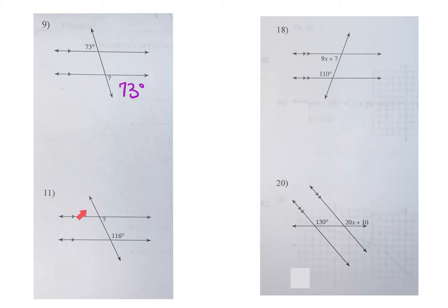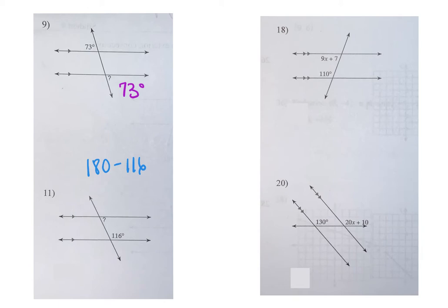If you look at the next one, number 11, these are consecutive interior. So you should know that these are supplementary, which means for this one you are going to have to subtract from 180. You're going to have to subtract from 180.